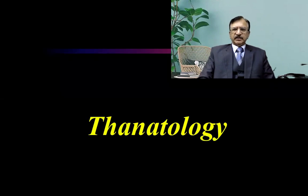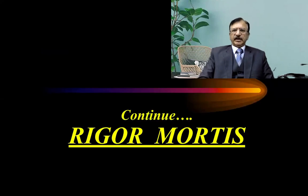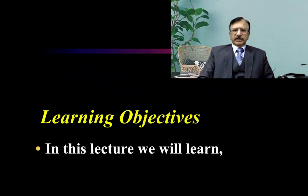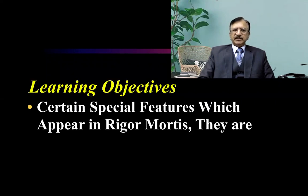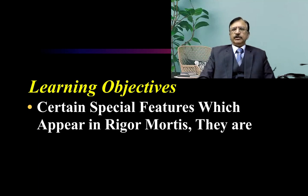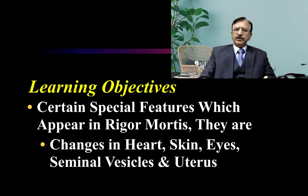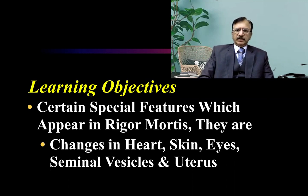We're discussing thanatology and continuing with the previous topic of rigor mortis. The learning objective of this lecture is to discuss certain special features noticed in rigor mortis that should not be confused with some pathological entities. These are changes we notice in the heart, skin, eyes, seminal vesicle, and uterus — these are of special mention.